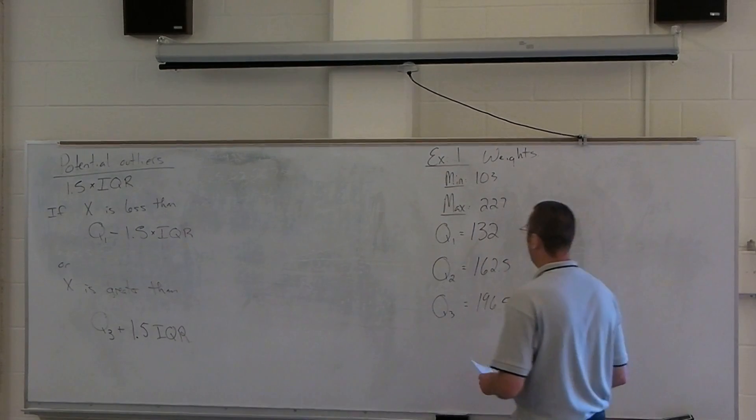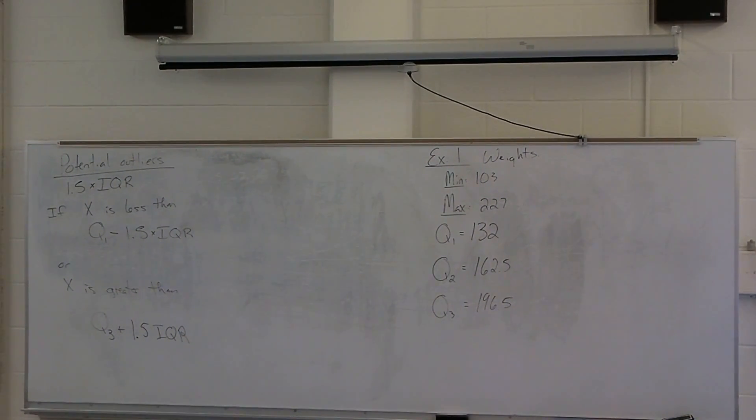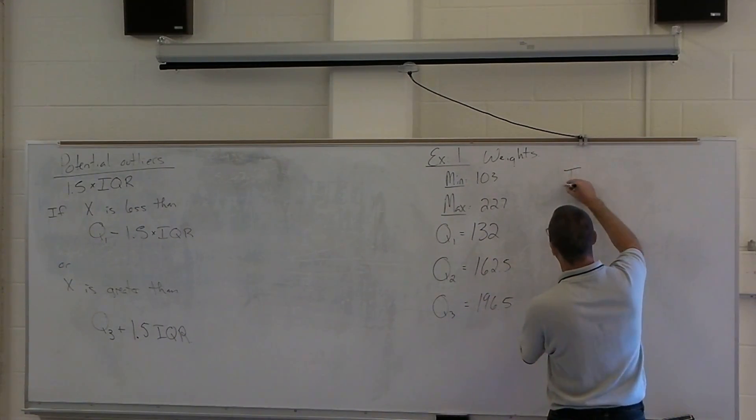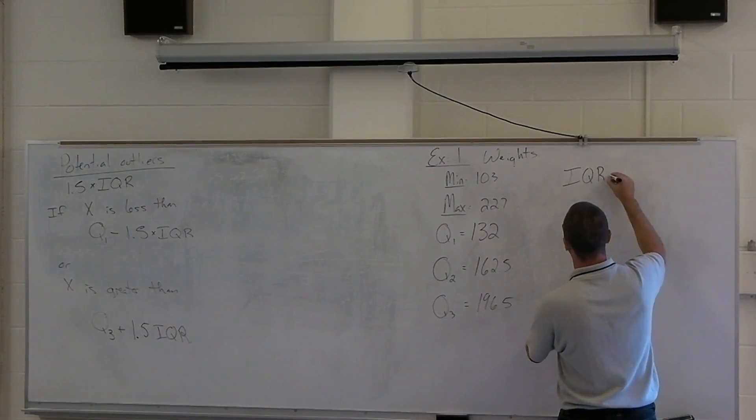Okay, so if we use this IQR stuff and we look at this data right here, do we have any potential outliers? Well, all we're going to do, first things first, figure out what the IQR is. What is our interquartile range here?